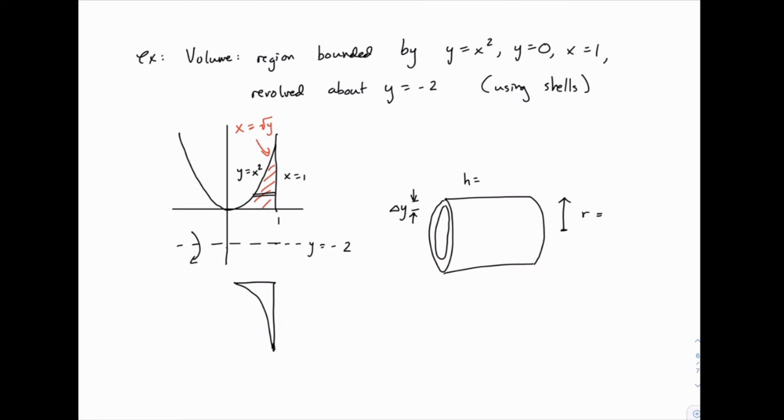Now, let's start with the height. The height of this shell will be the distance between these two curves, the distance between x equals 1 and x equals the square root of y. So, if we want to calculate that height, we just need to subtract 1 minus the square root of y. If you can see that, then we can move on to the radius. But that may not be obvious, and you may need to go back and check that again, and make sure that you can calculate that height appropriately.